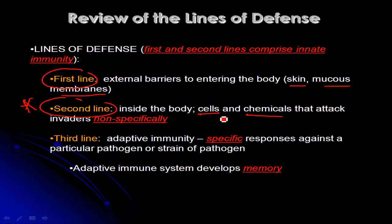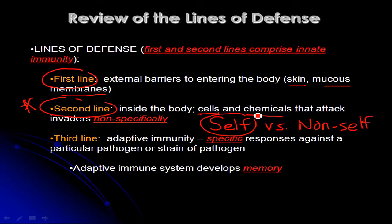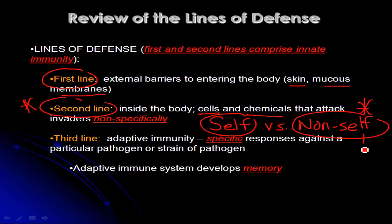One thing we really have not talked about with regard to the immune system yet is self versus non-self. We've mainly been thinking about your immune system attacking pathogenic microbes, but really your immune system is programmed to attack and destroy anything that is non-self — anything that's not naturally part of your body.